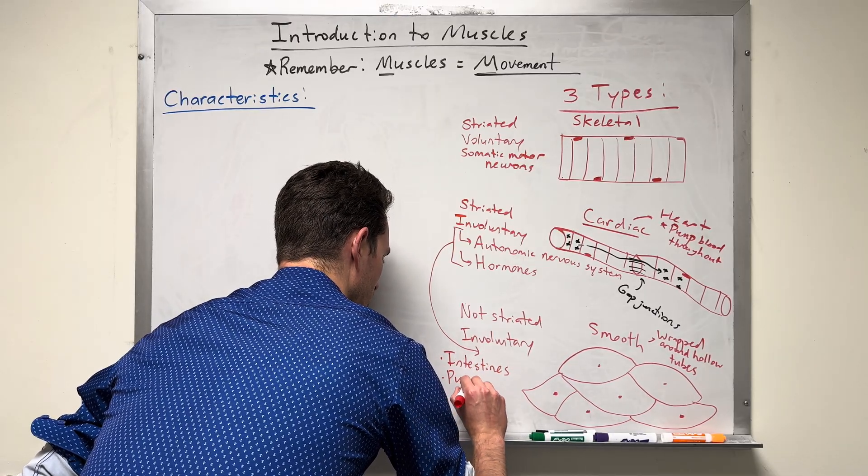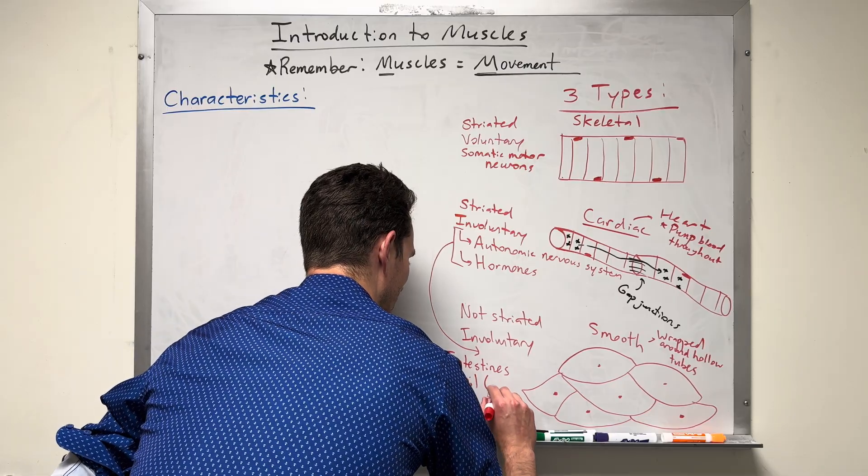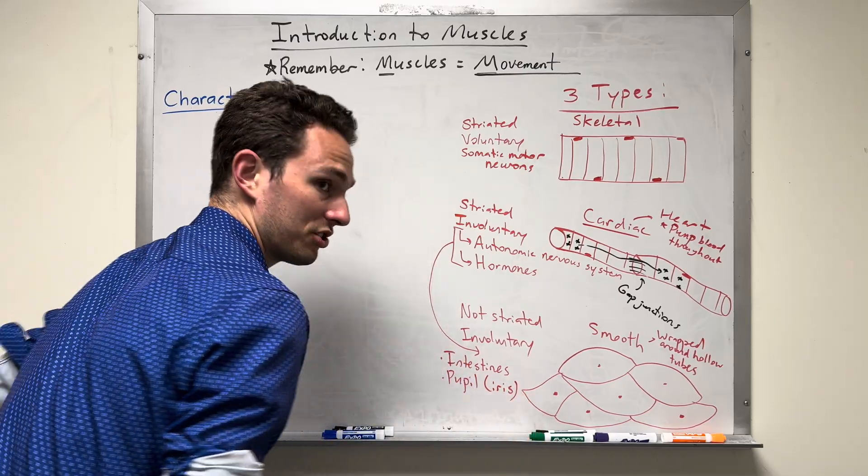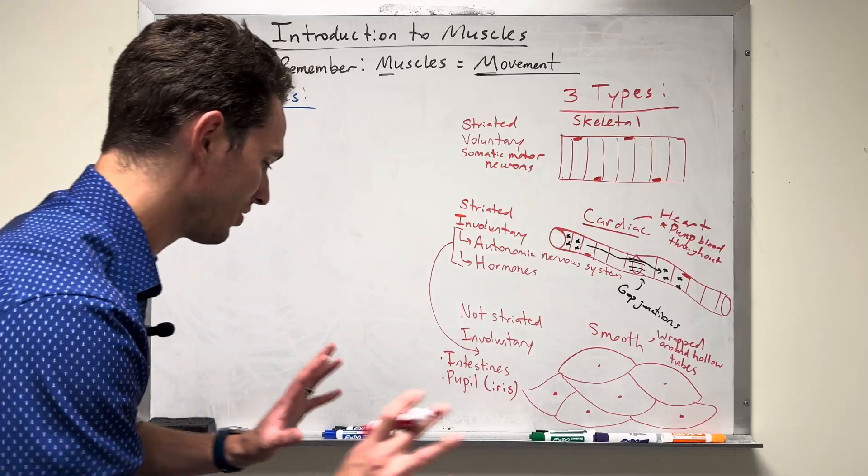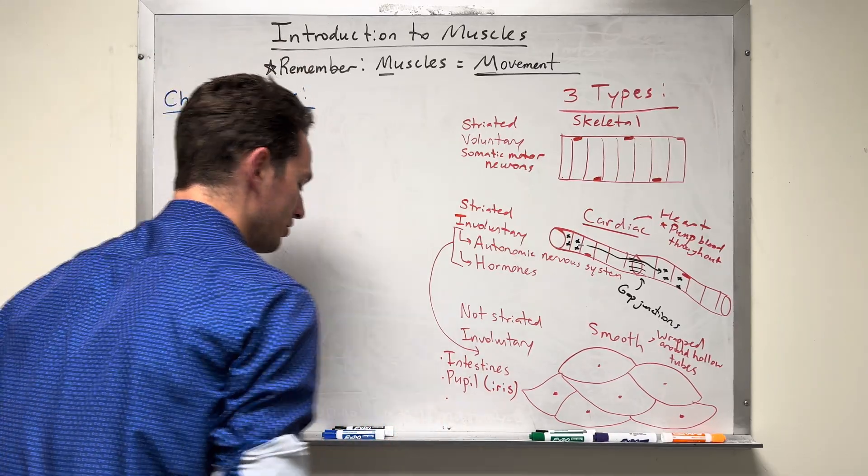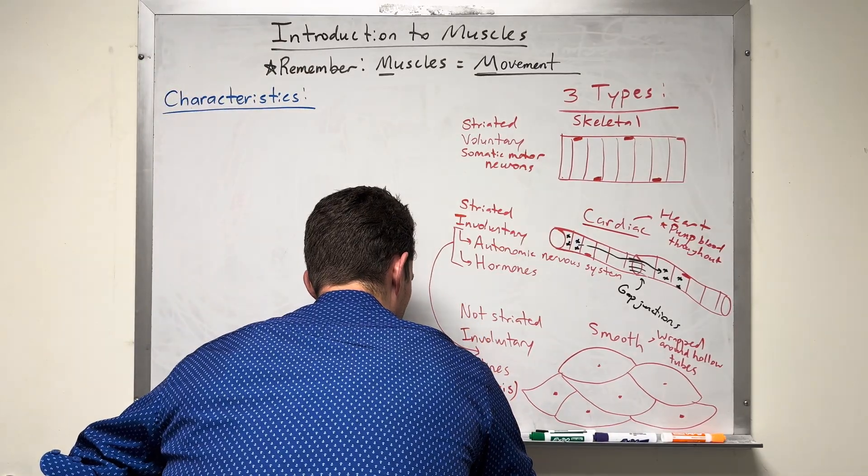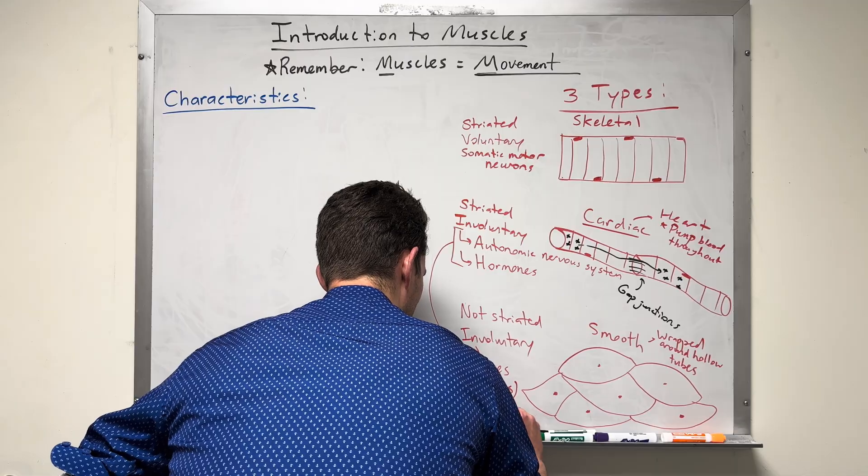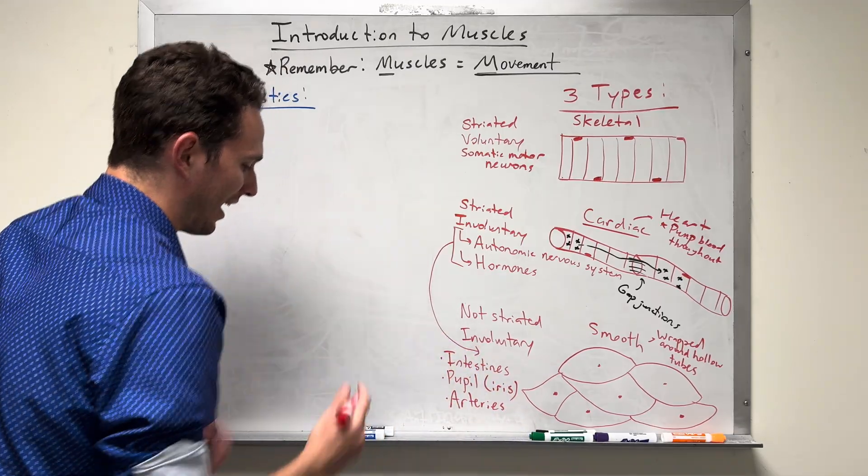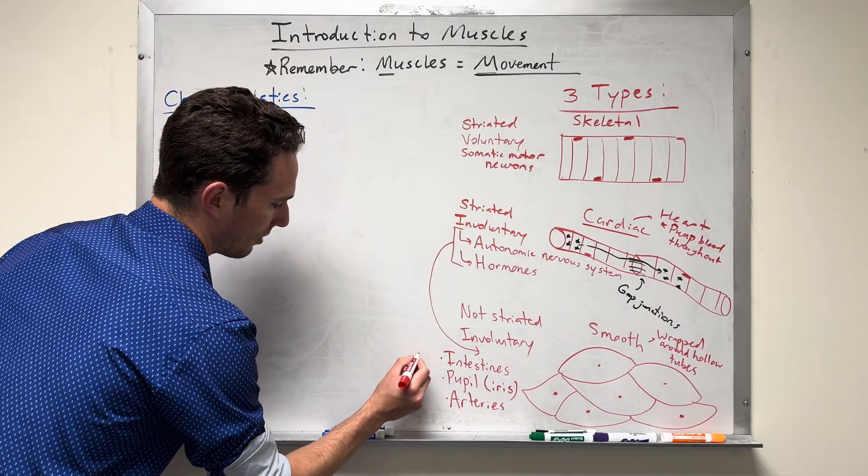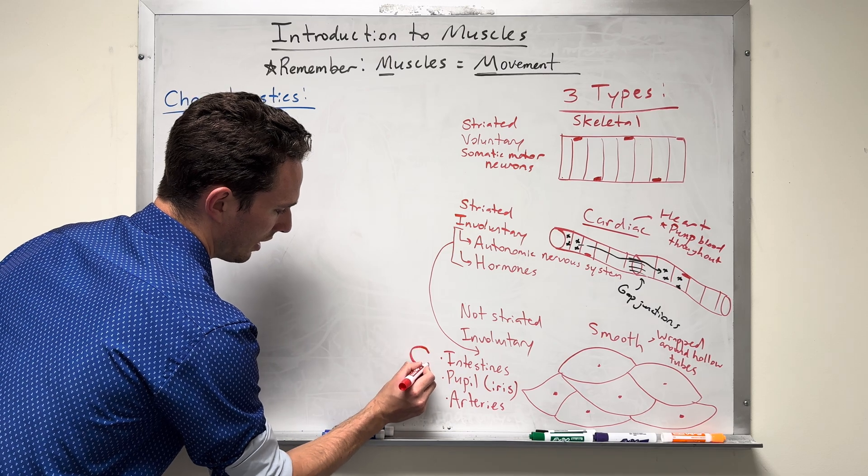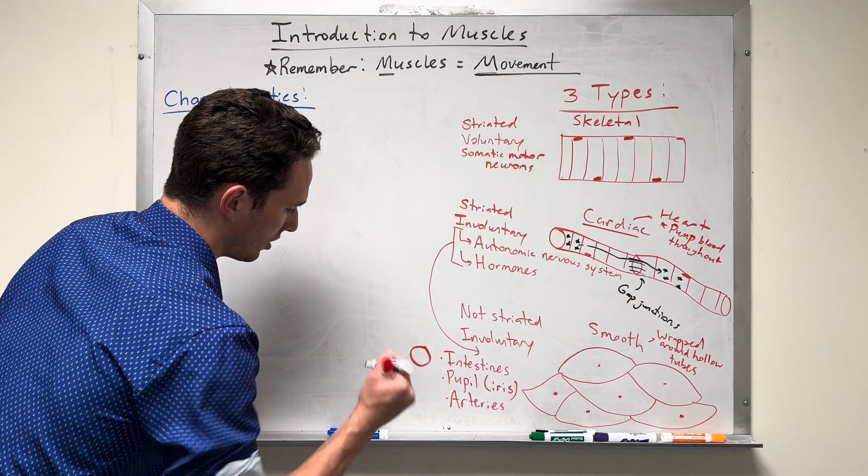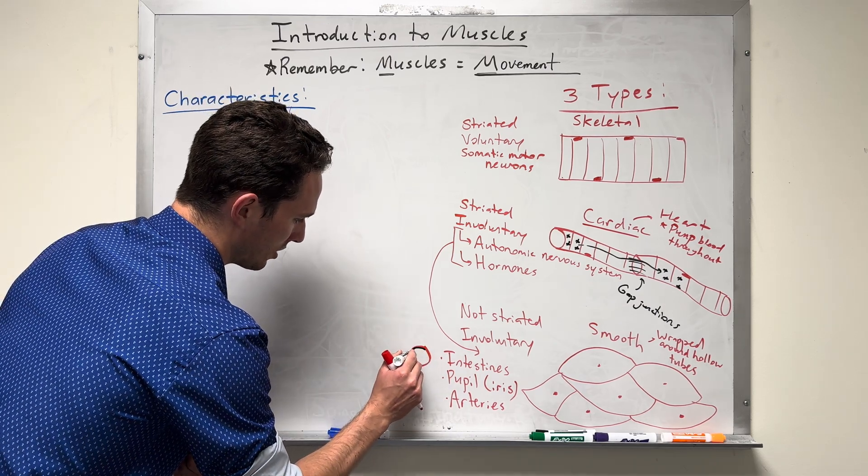Interestingly, you have smooth muscle lining your pupils, specifically in your iris. So you'll see these little smooth muscles in your iris later on in this class. And you also have big blood vessels called arteries that can actually narrow and relax depending on what we need for blood pressure. So basically, the muscle would be lined around that tube.